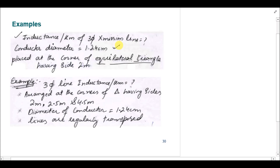In the first example, the conductor diameter is 1.24 centimeters, the same for all three phases. They are placed at the vertices of an equilateral triangle, and the distance between the vertices is 2 meters. Drawing it out: these are the three phases — A, B, and C — and the distance between all phases is 2 meters.